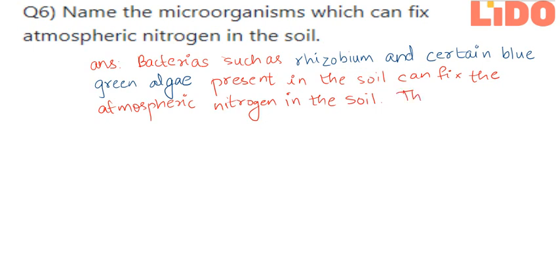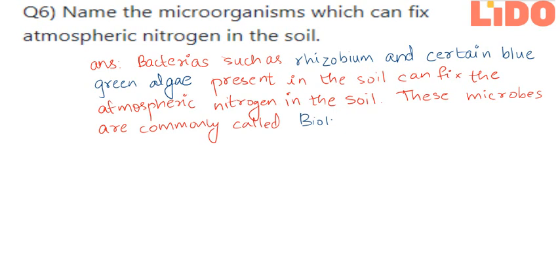These microbes are commonly known as biological nitrogen fixers. So, bacteria such as Rhizobium and certain blue-green algae present in the soil fix the atmospheric nitrogen, and these microbes are commonly known as biological nitrogen fixers.